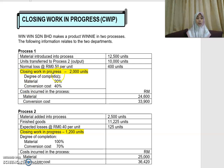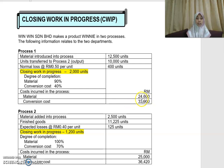The closing work in progress is 2,000 units, and you are given the degree of completion for your closing WIP. Material is 90% complete and conversion cost is 40% complete. The cost incurred in process one: material cost is 24,600 ringgit and conversion cost is 33,900 ringgit.